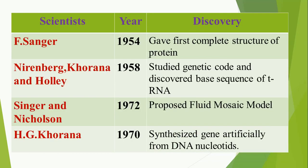It was Sanger who, in 1954, gave the first complete structure of a protein — Sanger's sequence is so famous. Nirenberg, Khorana, and Holley studied the genetic code and in 1958 discovered the base sequence of tRNA. Singer and Nicholson proposed the fluid mosaic model, which is the widely accepted model even today for the plasma membrane. Khorana synthesized a gene artificially from DNA nucleotides in 1970.